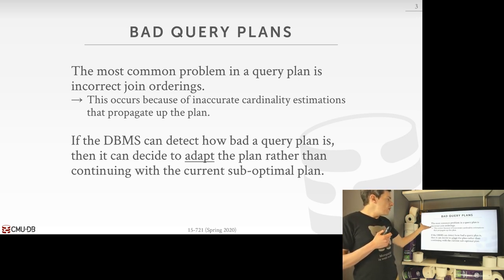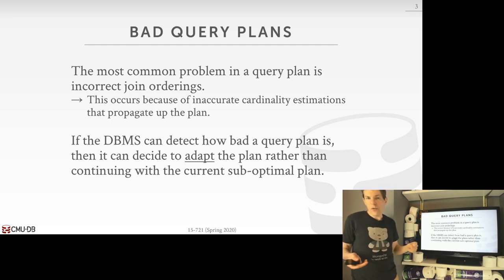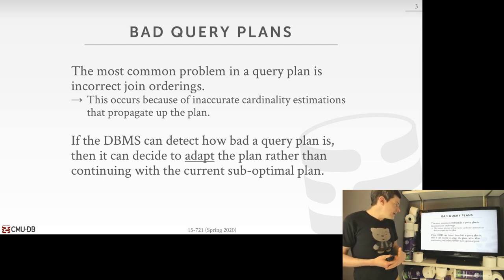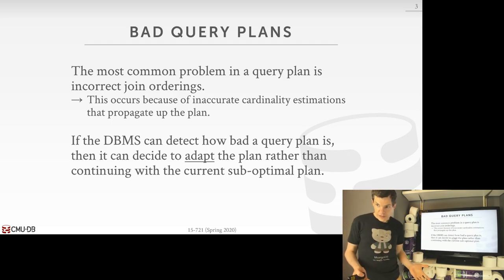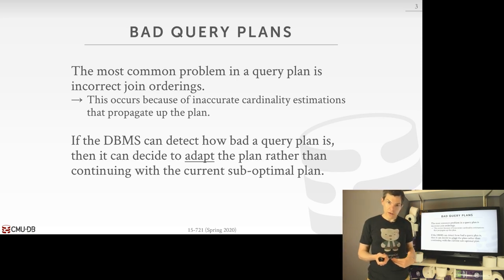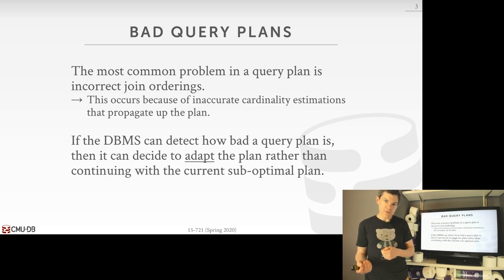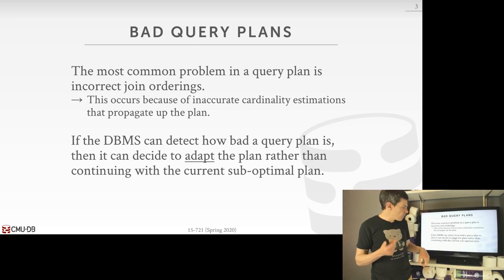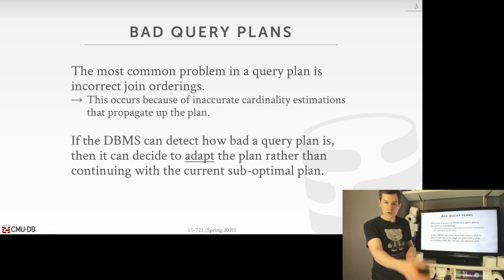Since we know things are going to go bad — we can just assume our cost model will be inaccurate and our optimizer will make bad decisions — ideally, if we can detect how bad our query plan is once we start running it, we can make a decision to adapt the plan to account for differences between what we see in the real data versus what we assumed.